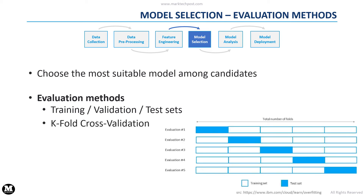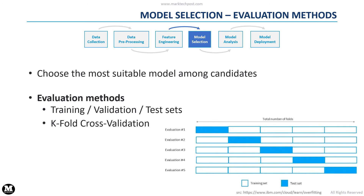Now we have another problem to face. This approach is not robust enough, since we could intentionally split the dataset to obtain a test set that contains examples on which our model has great performance. For this reason, it is very important to use the k-fold cross-validation technique. Data are split into k equally sized subsets called folds. At each iteration, one fold is used as the test set while the other folds are used as the training set. The evaluation metrics are computed on the test set, and the scores obtained at each iteration are then averaged to obtain the overall performance of the model.